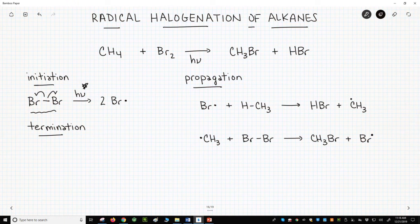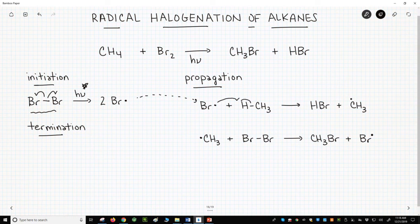For propagation, we begin with a Br radical from the initiation step. A Br radical reacts with the CH on methane. Here is the mechanism. The product of this step, the first propagation step, is HBr and methyl radical.